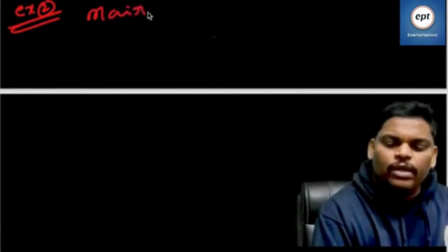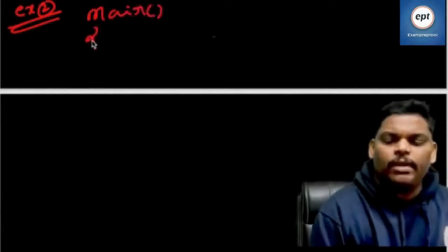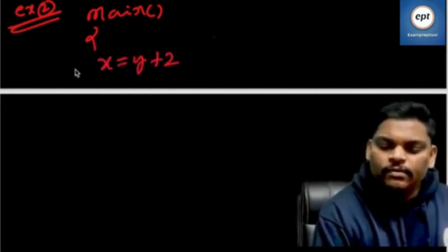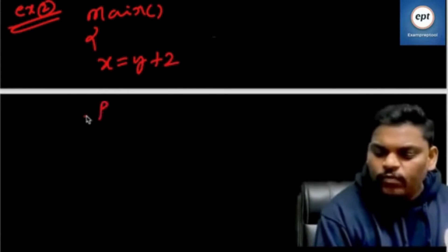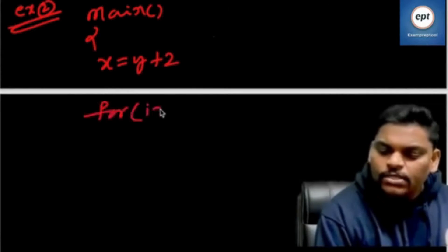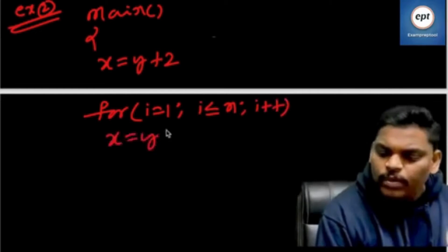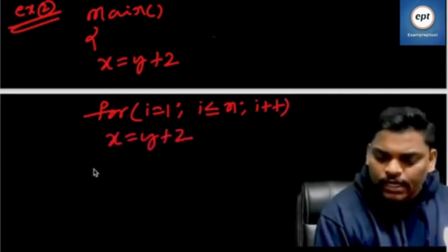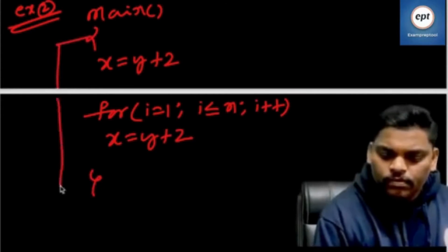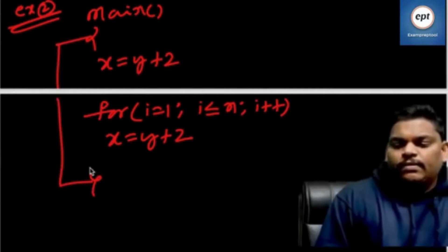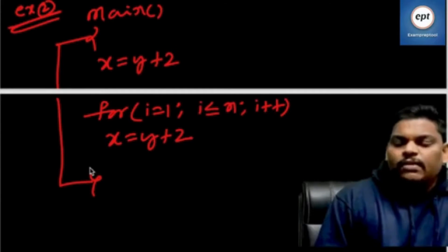Now, 30 programs. Not one program — two programs. Program 2: main. X is equal to Y plus Z. Next: for I is equal to 1, I less than or equal to N, I plus plus — X is equal to Y plus Z. End of the program. This program contains two statements. For loop is not a statement.